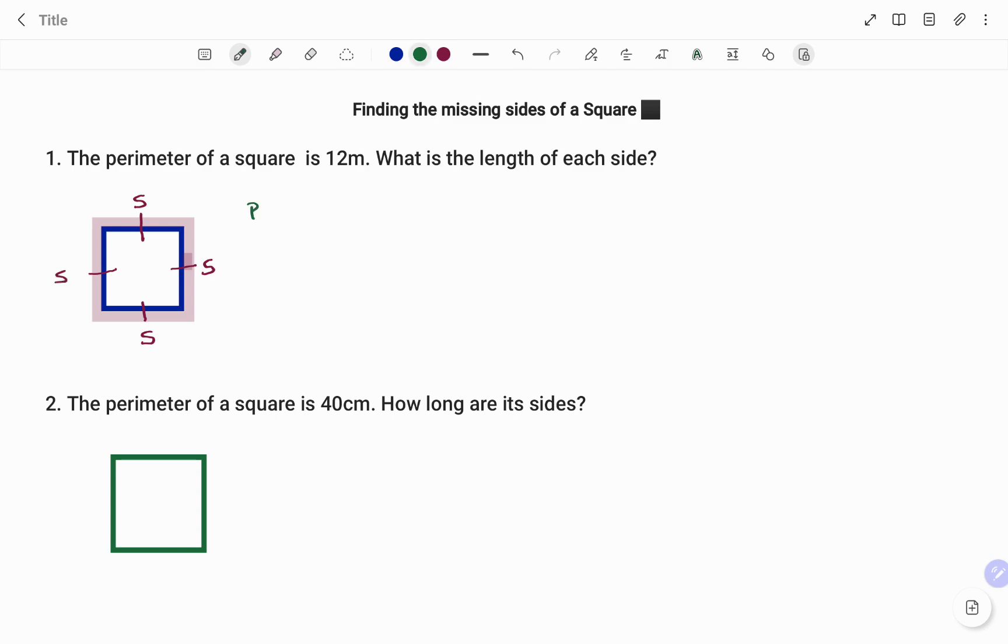The perimeter of a square is equal to the sum of all the sides, so we have S plus S plus S plus S. Or, in a short form, that can also be 4 times S, that's the side. And in this question, we've been given that the perimeter of the square is 12 meters. So 4S here is equal to 12 meters.